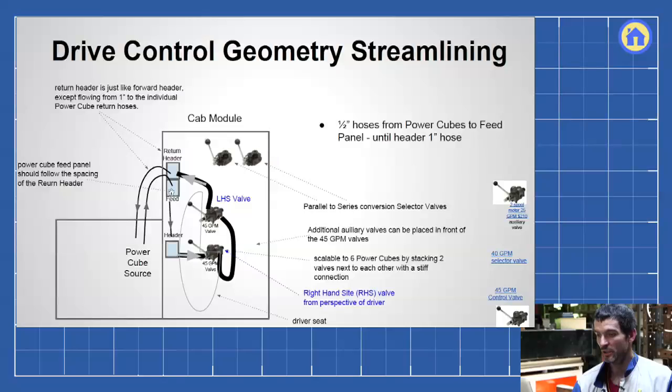And the interesting part here is that between the power cube feed, the power cube panel here where all the power cubes come in, so here I just show one power cube, but we actually have six of them. In between the power cube feed and the combining header, there are quick couplers, which means that you can put any single other device in there.